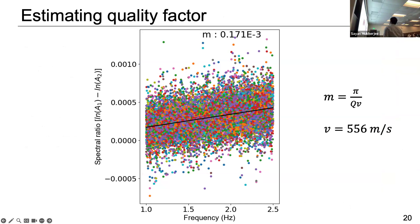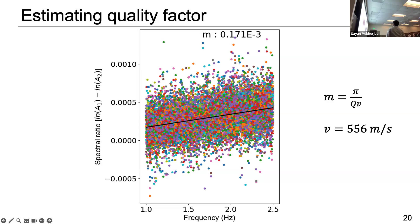Here you can see the attenuation measurement for one day. The dots represent all combinations of sensors and train arrivals — we have almost 70,000 points for one day. We fitted a line through that, measured the slope, and using a velocity of 5 to 6 meters per second, we measured a Q factor per day.